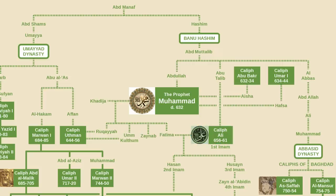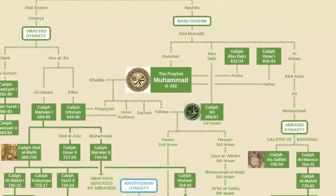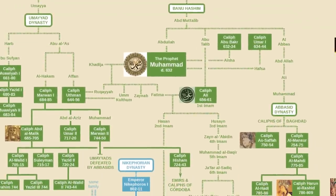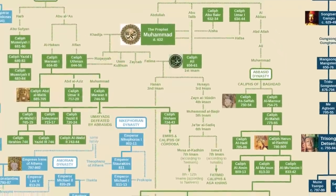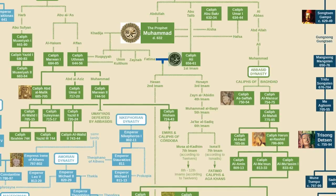According to Shia Muslims, only Fatima was the biological daughter of Muhammad and Khadija. According to that tradition, the other daughters were actually the children of Khadija's sister and were adopted. But what every Muslim tradition does agree on is that only Fatima has descendants that can be traced to today. Together with Ali, she had two main sons, Hassan and Hussain.